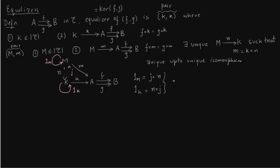For objects K and M with maps N and J between them, we get 1_M = J∘N and 1_K = N∘J, which shows the equalizer is unique up to isomorphism. That was the standard trick.